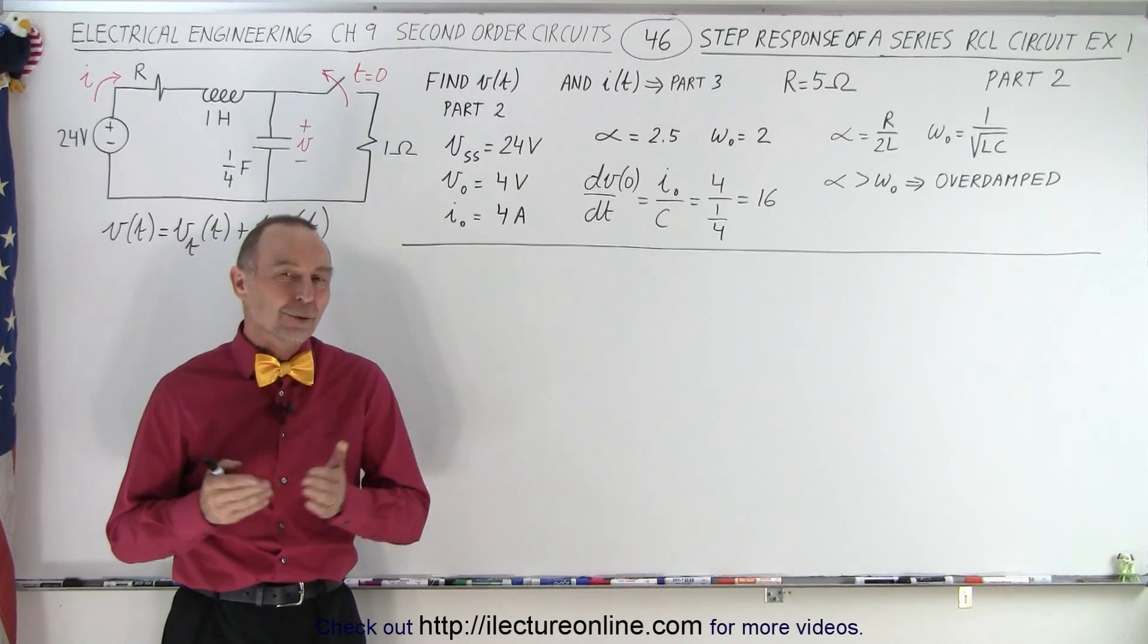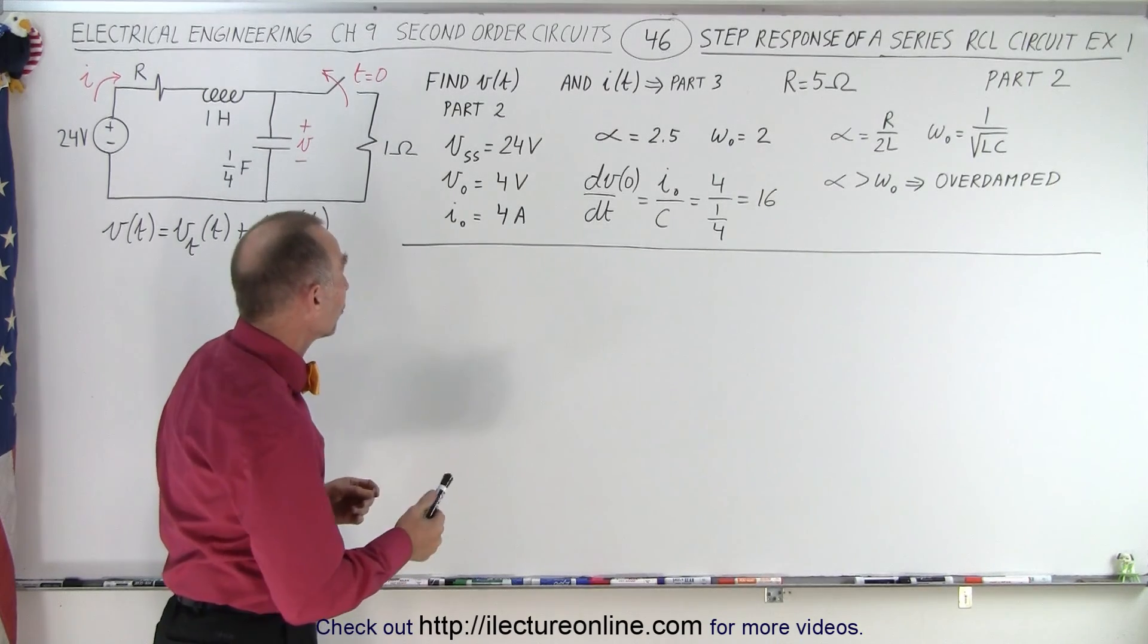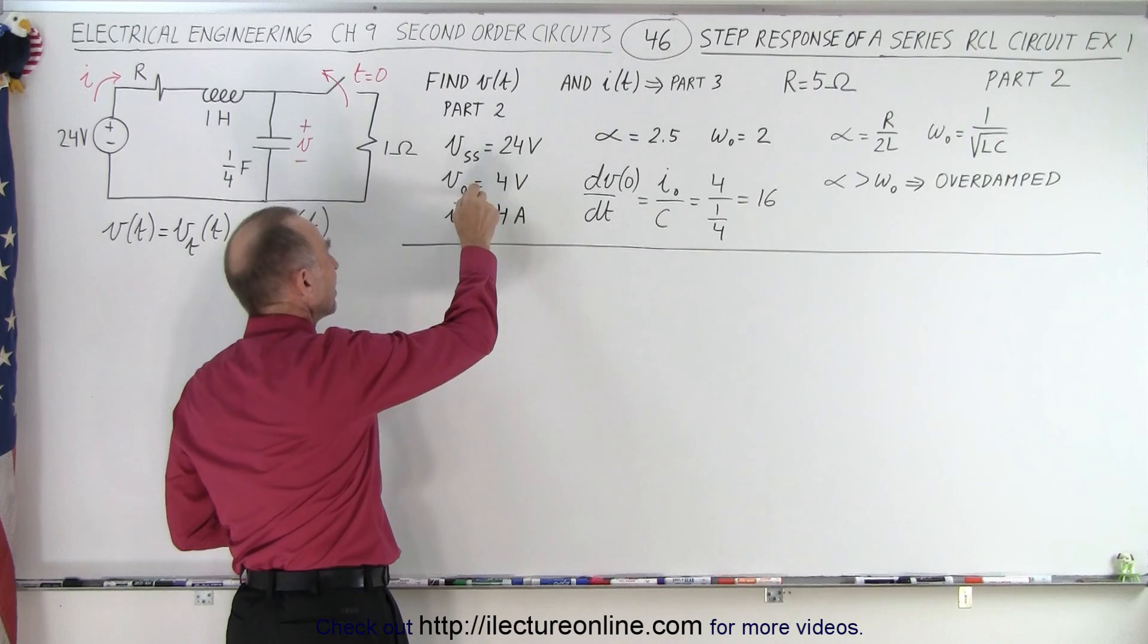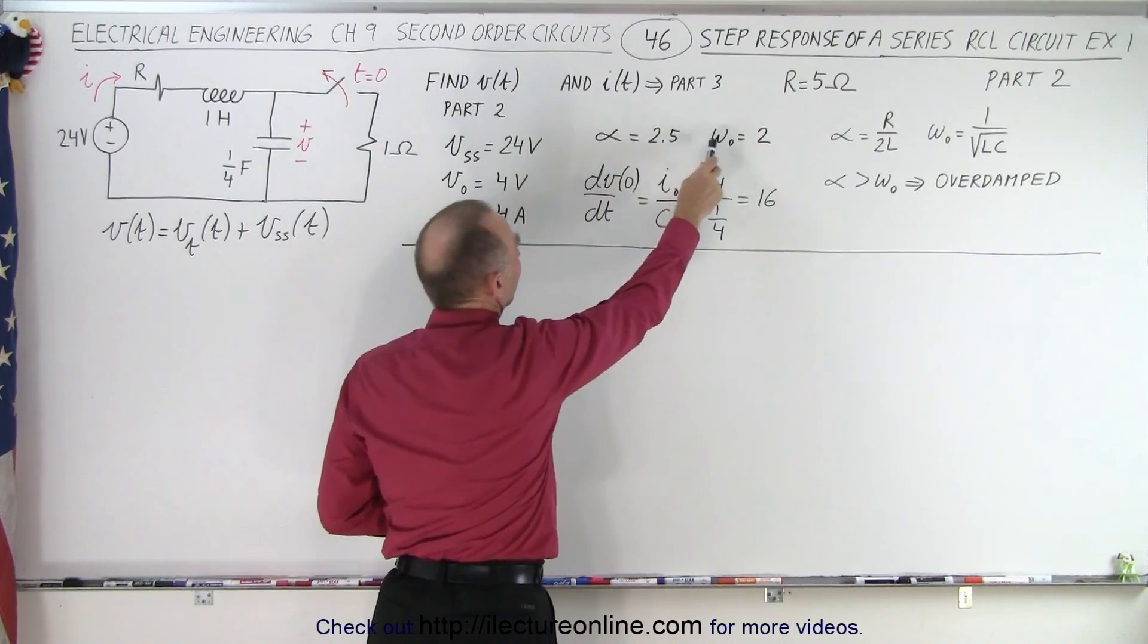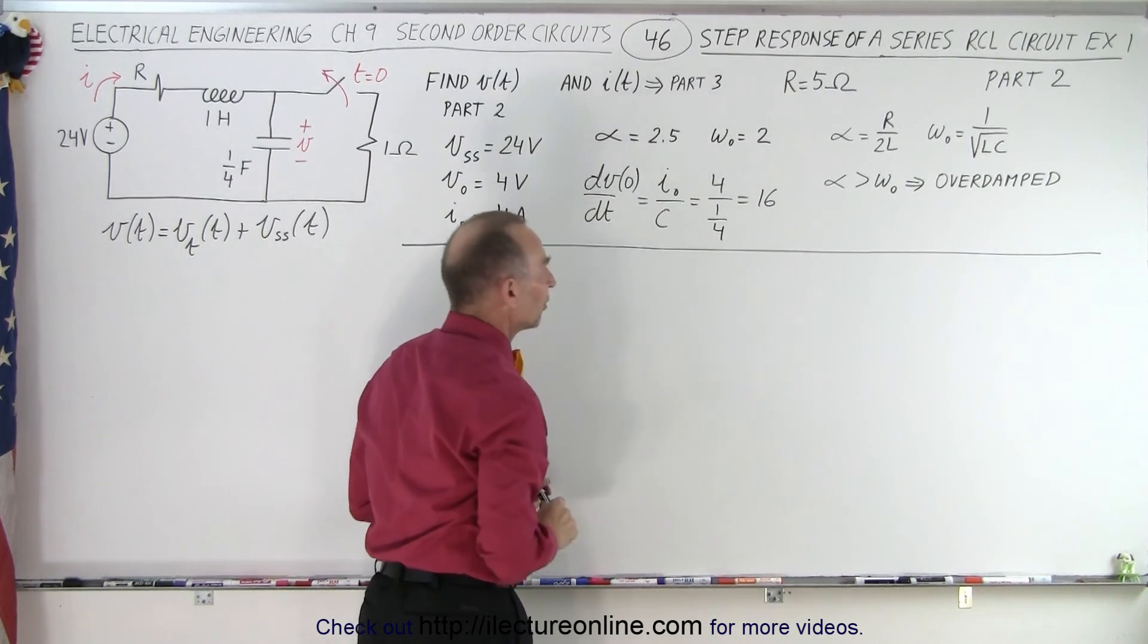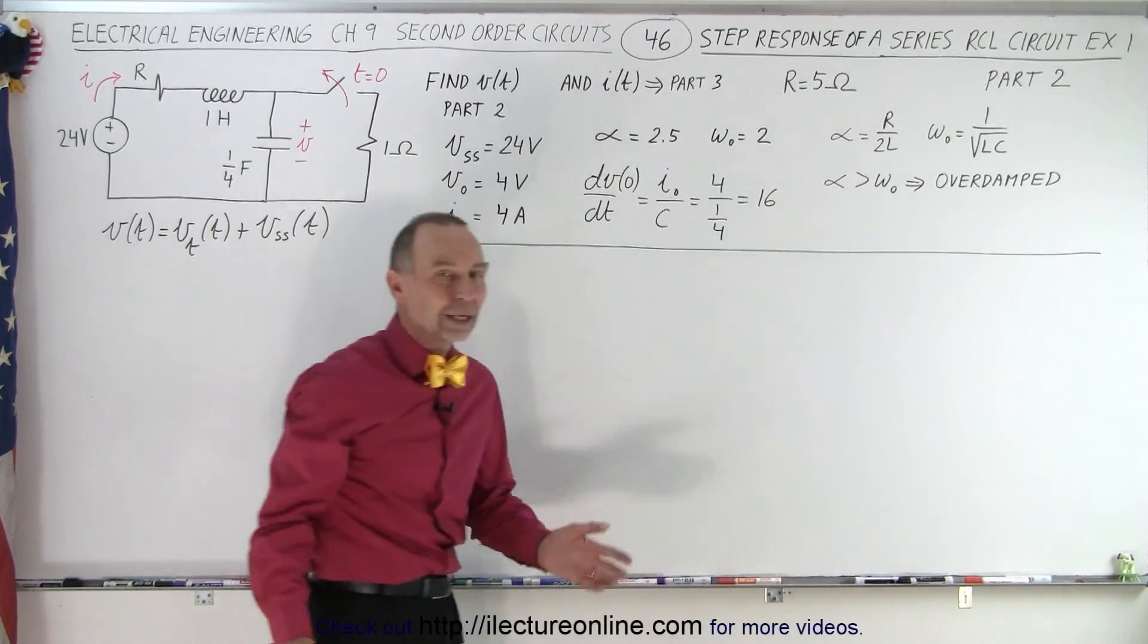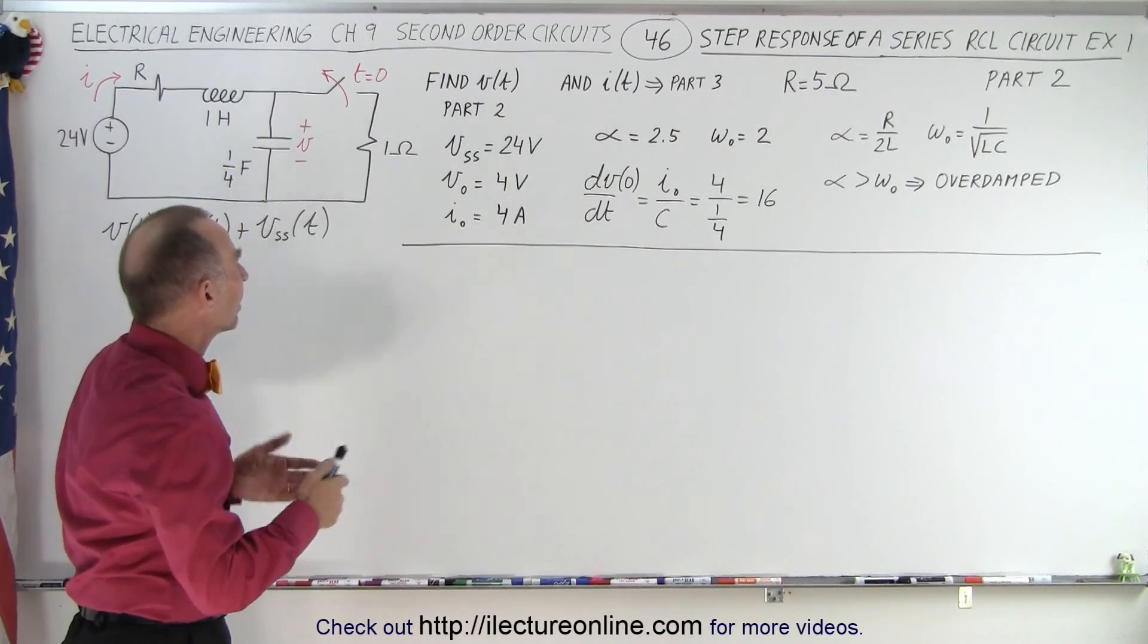Welcome to our lecture online. In the previous video, we got all the initial parts out of the way. In other words, we figured out the steady state voltage, we figured out the initial voltage, the initial current, we found alpha and omega sub-naught, we found the derivative of the voltage with respect to time when time was equal to zero, and we related alpha to omega and determined that it was an overdamped case.